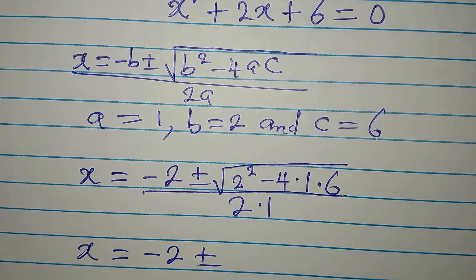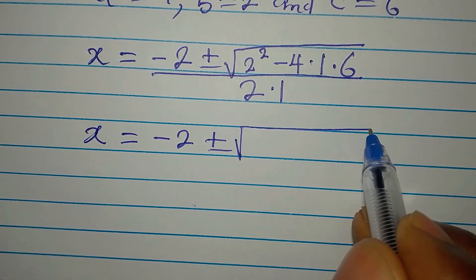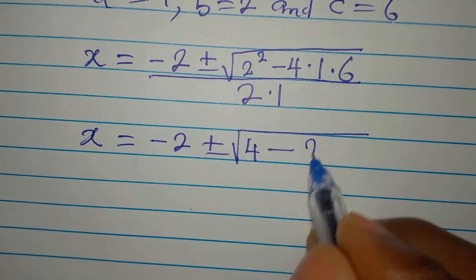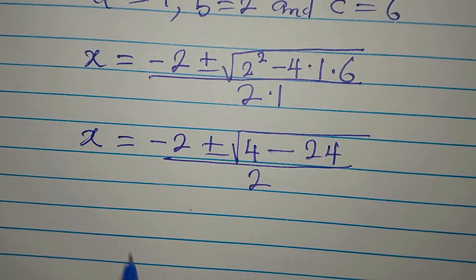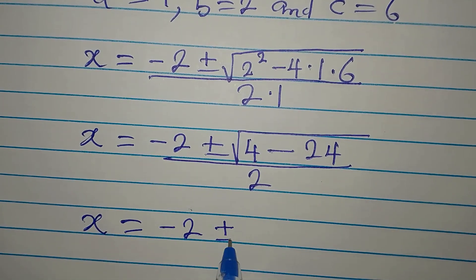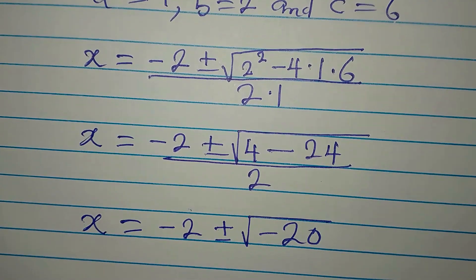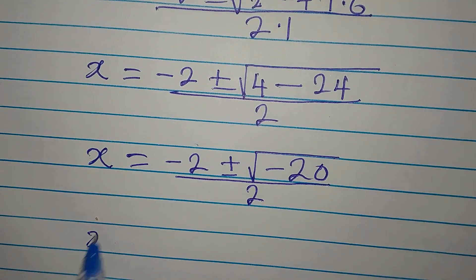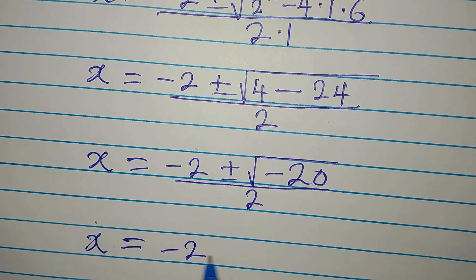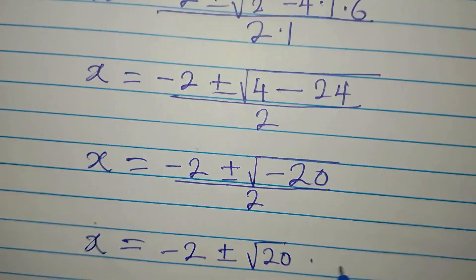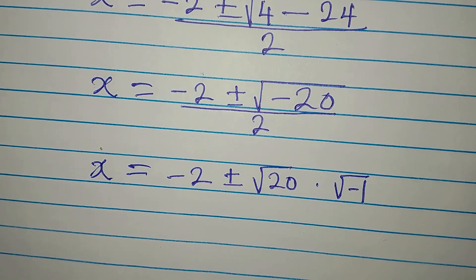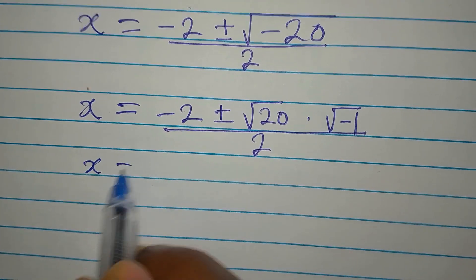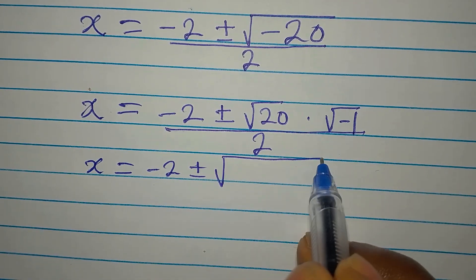So x equals minus 2 plus or minus square root of 4 minus 24, divided by 2. That gives minus 2 plus or minus square root of negative 20, divided by 2. We extract the negative as square root of negative 1, so it becomes minus 2 plus or minus square root of 20 times i, all over 2.